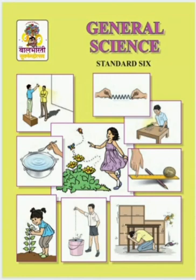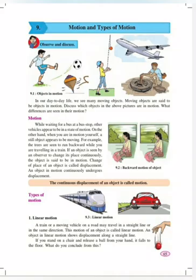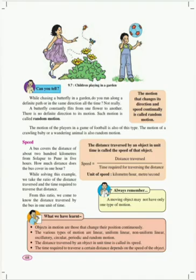Speed. Let's solve an example from your textbook page number 68. This topic, speed, is on your textbook page number 68. A bus covers the distance of about 200 kilometers from Solapur to Pune in 5 hours. How much distance does the bus cover in 1 hour?